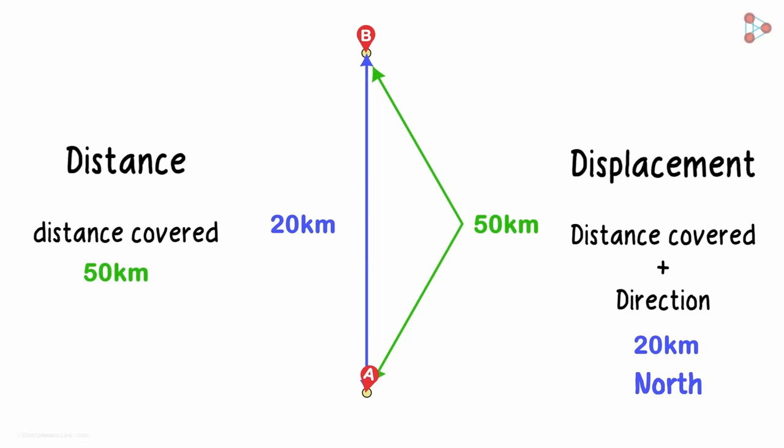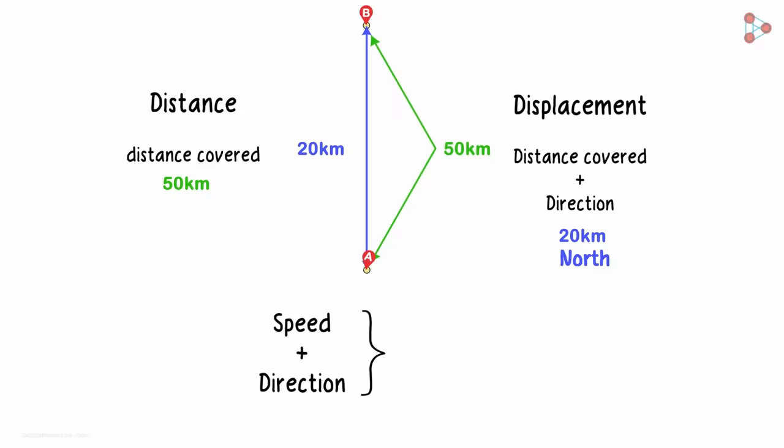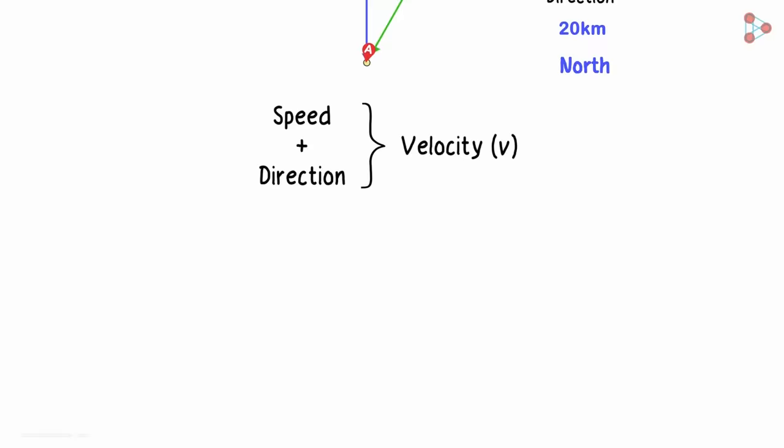So speed does not tell us the direction. Is there anything that tells us the speed along with direction? Yes, it's velocity which can be written as lowercase v. Let's see how it differs from speed.